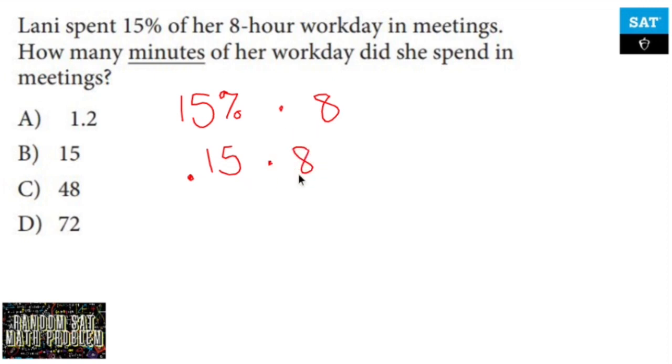I don't remember if this is the calculator section or no calculator section. So I'm going to go without a calculator. A tenth of eight is 0.8. So 0.15 times eight is going to be 1.2. So 1.2 hours are dedicated to meetings.